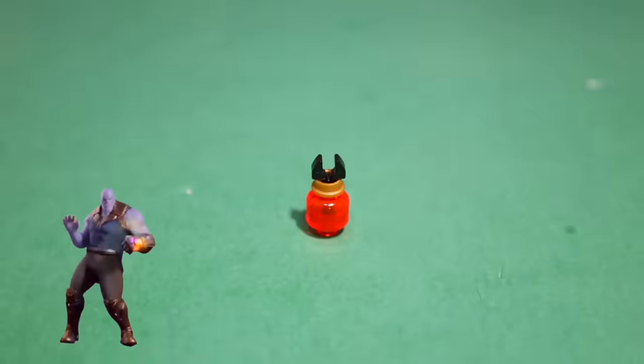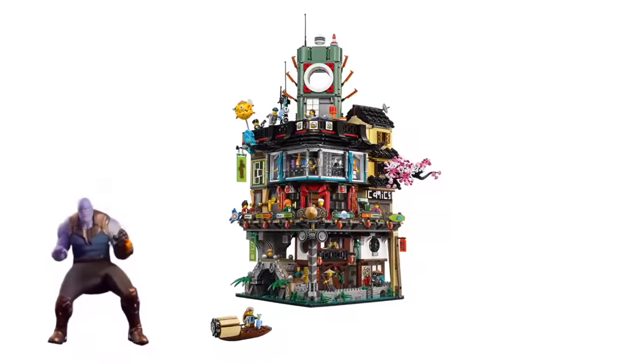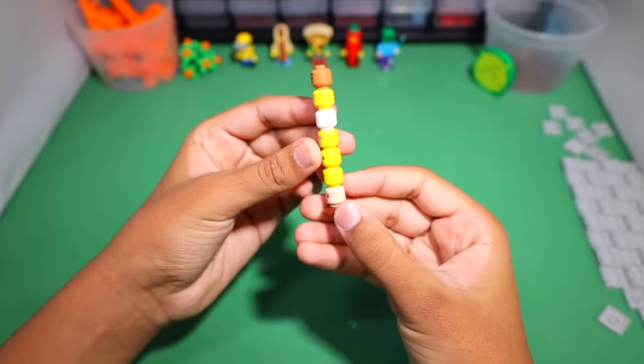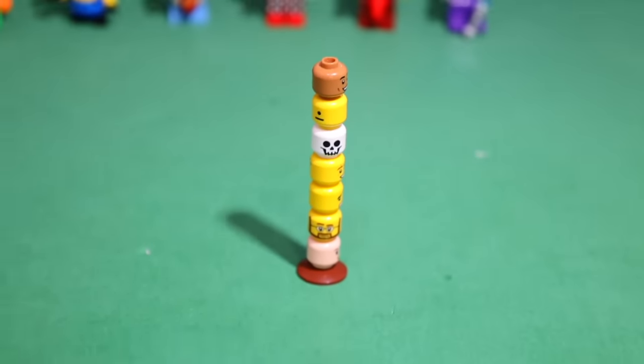And you can also use minifig heads to build lanterns, like LEGO's Ninjago City Set, jugs of milk, or any liquid. Drink your water, boys. And you can build very textured pillars, aka a pool of LEGO heads.